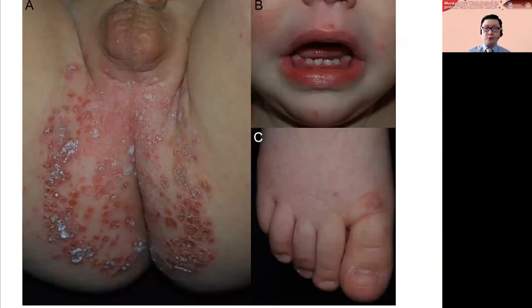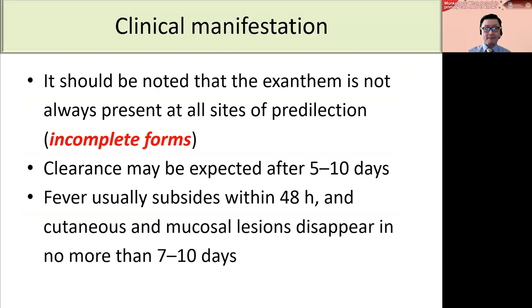Hand, foot, and mouth disease can also involve the genital area and buttock region, and sometimes this can be misdiagnosed as scabies. It should be noted that the exanthem is not always present at all sites of predilection — this is sometimes known as the incomplete form of hand, foot, and mouth disease. Clearance is expected after five to 10 days; fever usually subsides within 48 hours, and cutaneous and mucosal lesions disappear in no more than seven to 10 days.